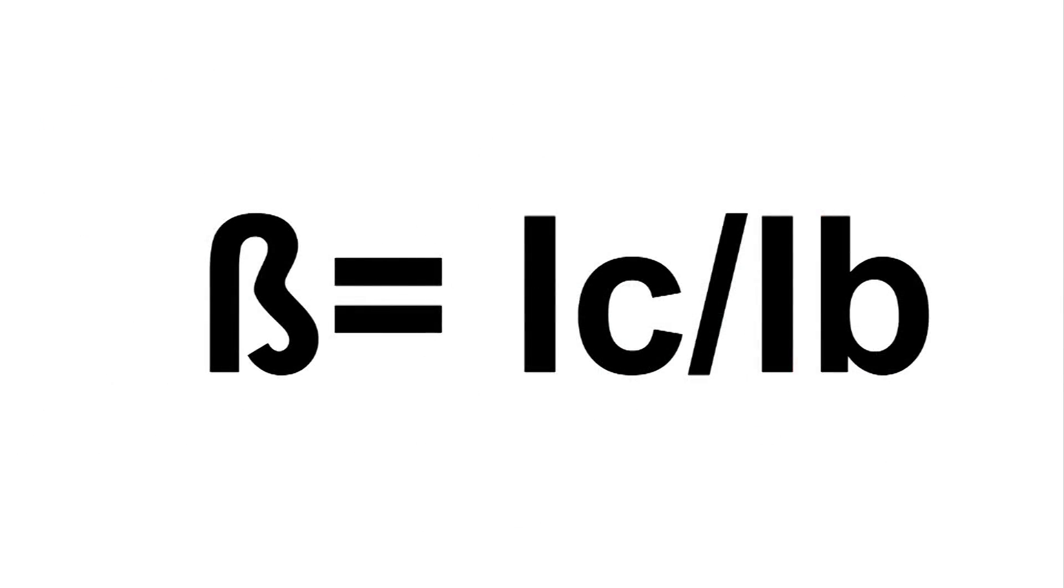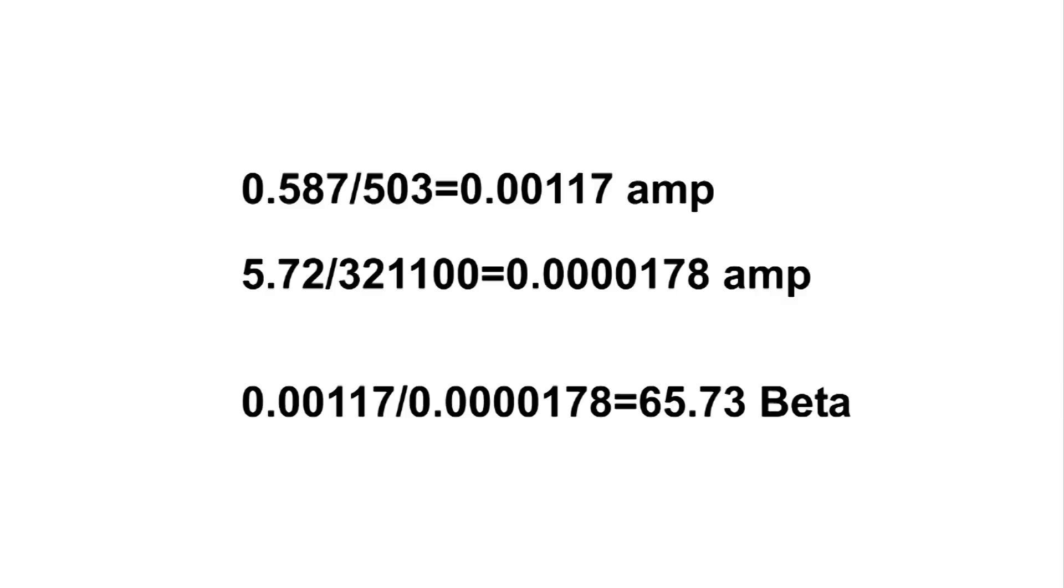Now here is the formula for figuring out the beta. We need the current for the collector and we need the current for the base. So using the results on the first transistor, we've got the current for the collector and then current for the base. And then when we divide those two, we get a beta of 65.73.